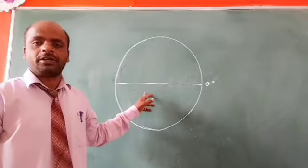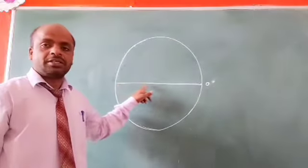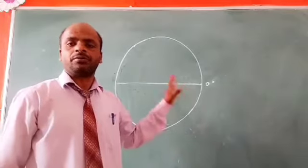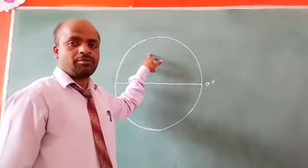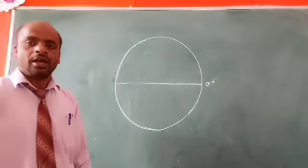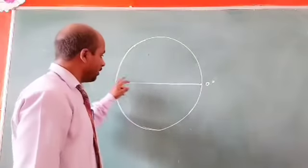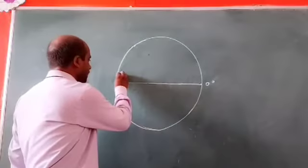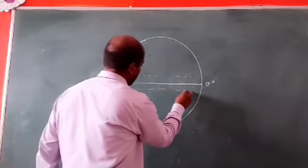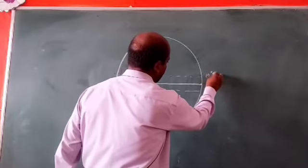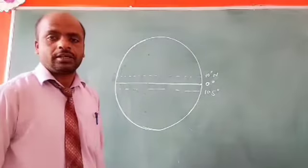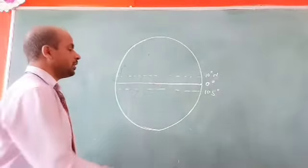What is the equator? An imaginary latitude line that divides the globe into two equal halves — the northern hemisphere and the southern hemisphere — is called the equator. The region from ten degrees north and ten degrees south of the equator is called the equatorial region.